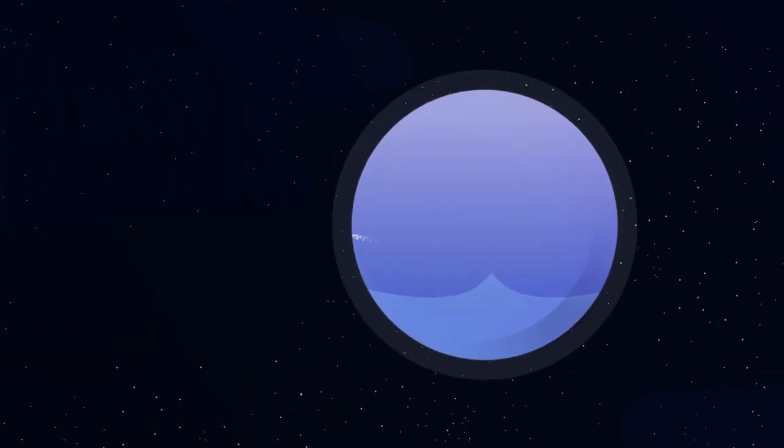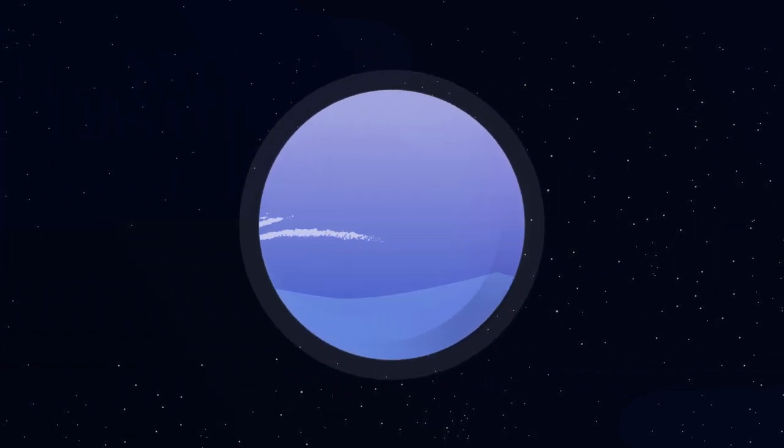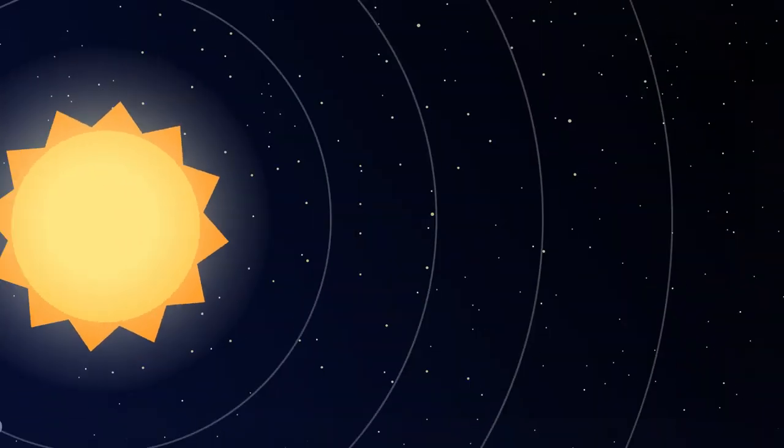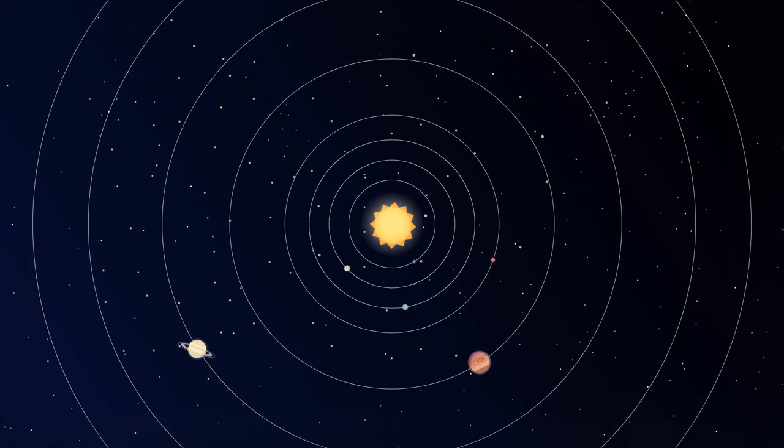Our last planet is Neptune, a blue planet with swirls in its atmosphere. And with that, we have explored all the planets of the solar system.